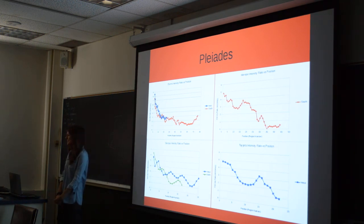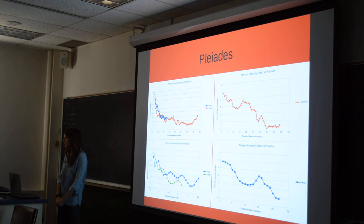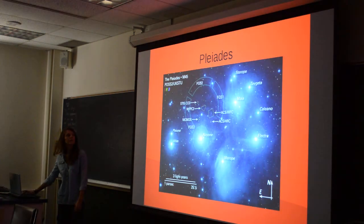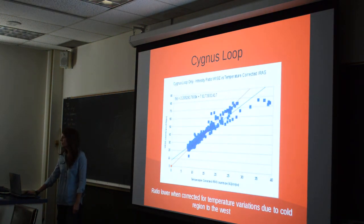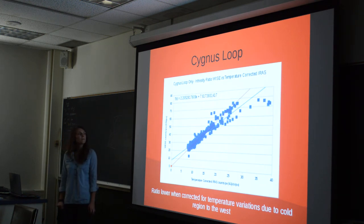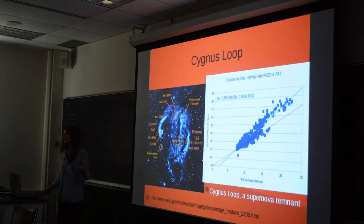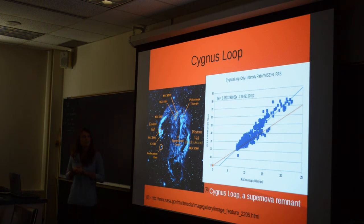Question: Could there be any dust temperature effects close to the OB stars that need accounting for before doing the ratio of PAHs to large grains? The large grains were the ones mostly affected. It's really hard to correct for the small grains. Their temperatures aren't affected as much by direct UV radiation as the PAHs are, so we didn't do corrections for that.